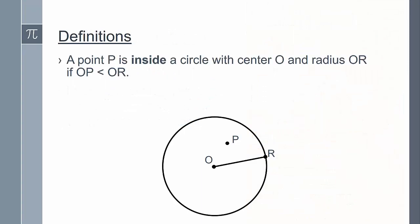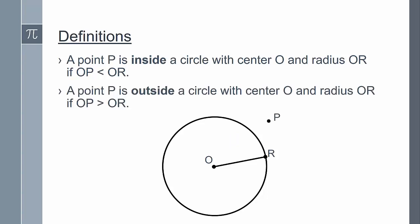We say a point P is inside a circle with center O and radius OR if segment OP is less than segment OR. So here's an example of P inside the circle centered O. And then we say a point P is outside the circle with center O and radius OR if OP is greater than OR. So this is an example of P being outside the circle.